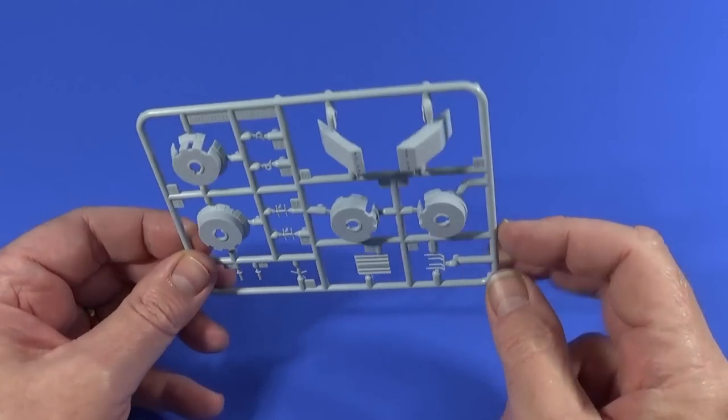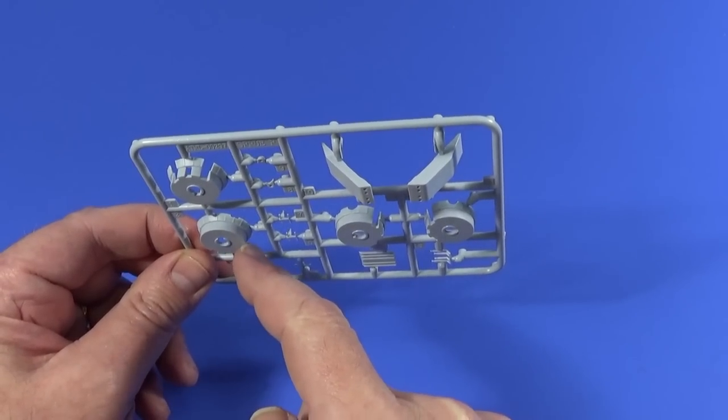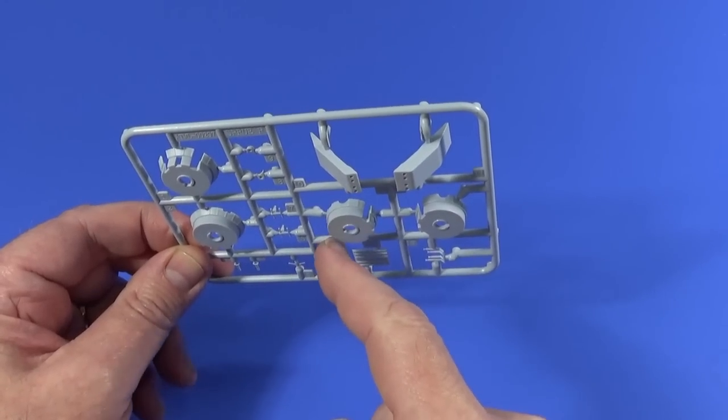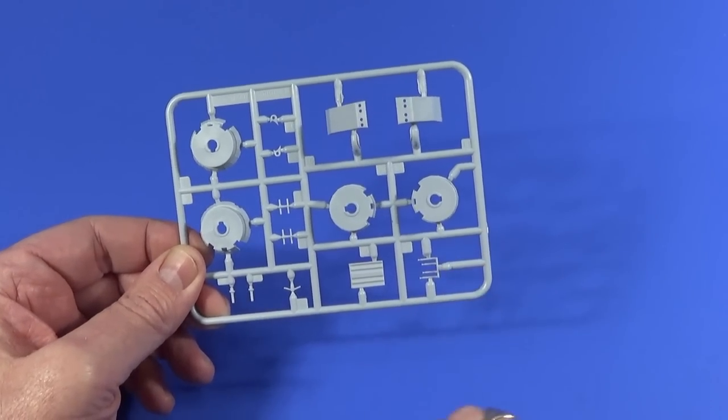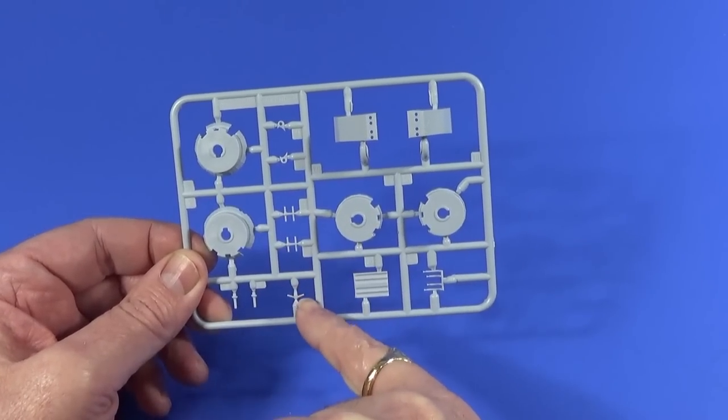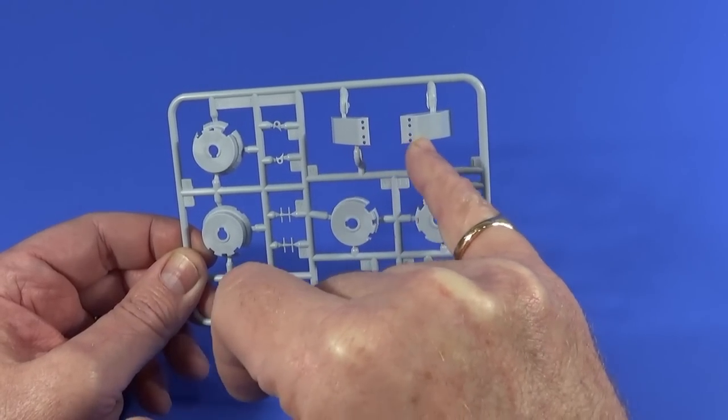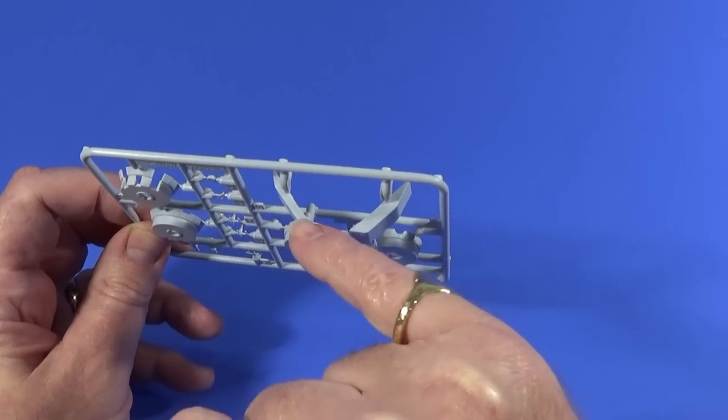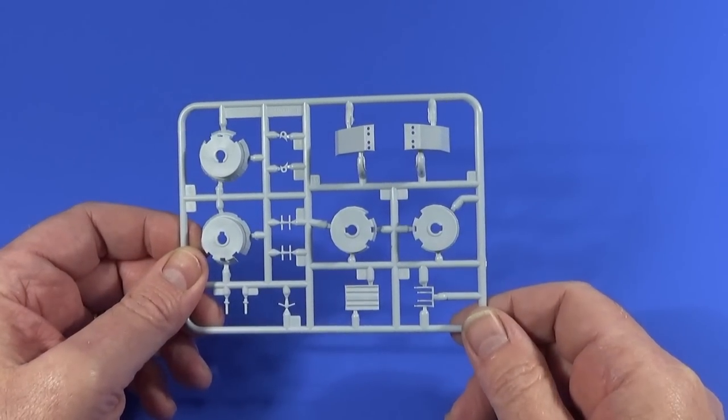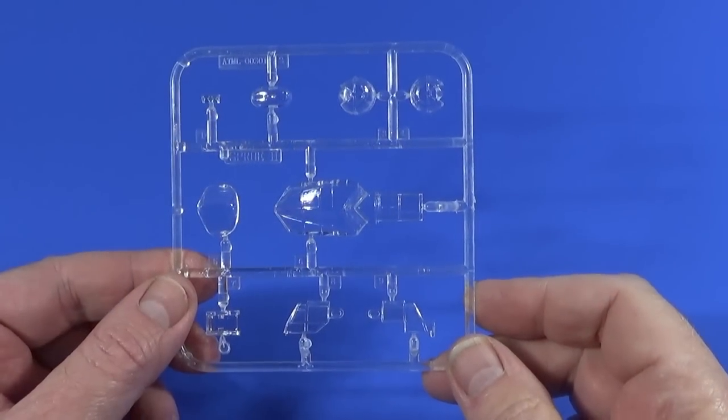And frame F, the back end of the engine nacelles with the gills open or closed, radiator gills. Some Yagi aerials, I guess radio aerials. The machine guns, and then the two designs of machine gun pack for the bottom of the plane.